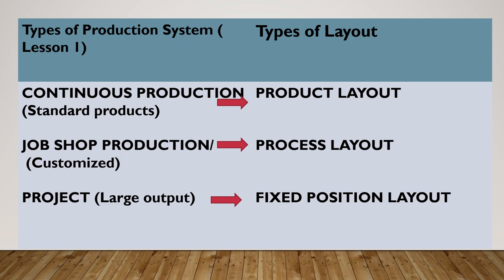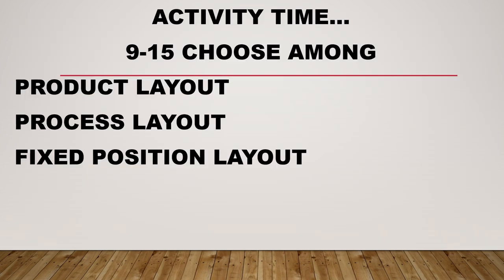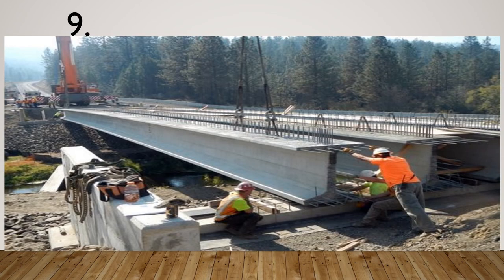To continue with our activity, for items 9 to 15, you are going to identify the type of layout applicable for the following companies or pictures shown. Your choices are product layout, process layout, or fixed position layout. Examine the picture provided and identify which layout type it represents.